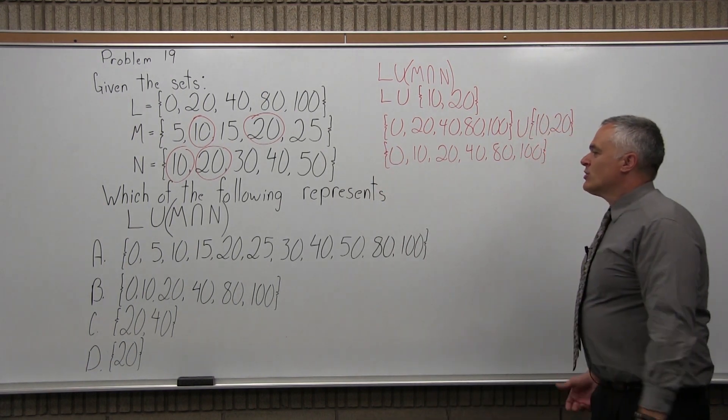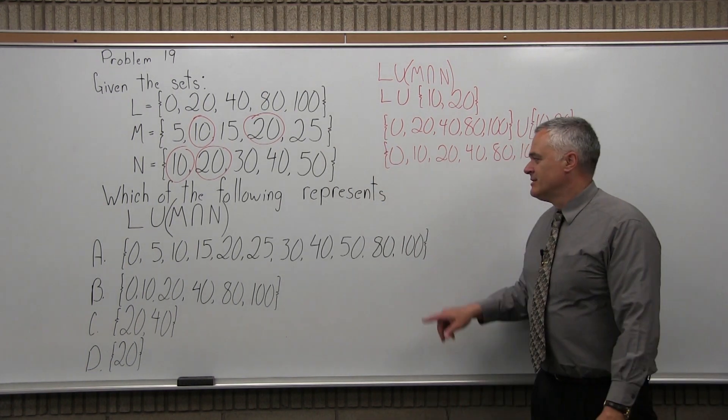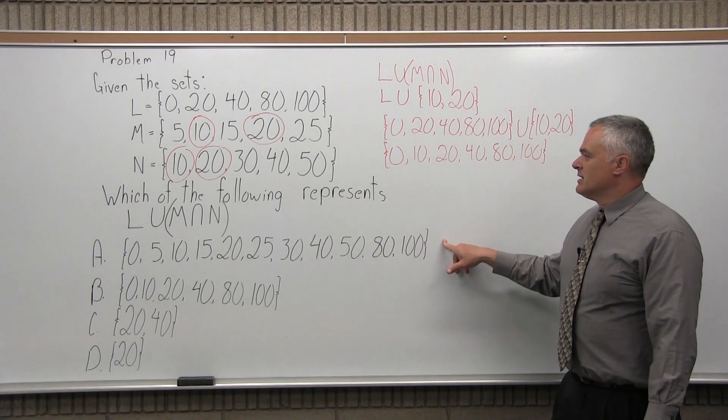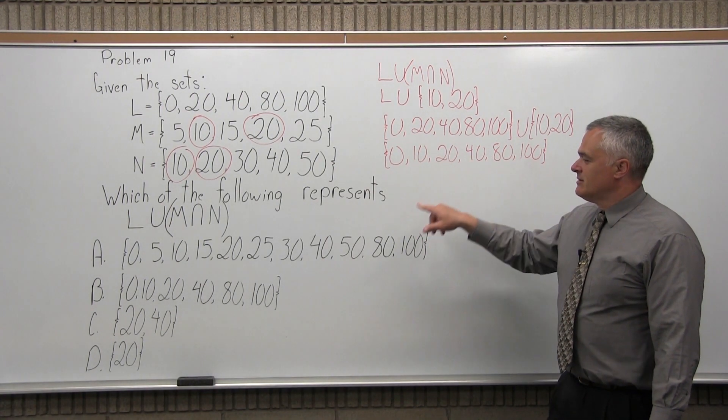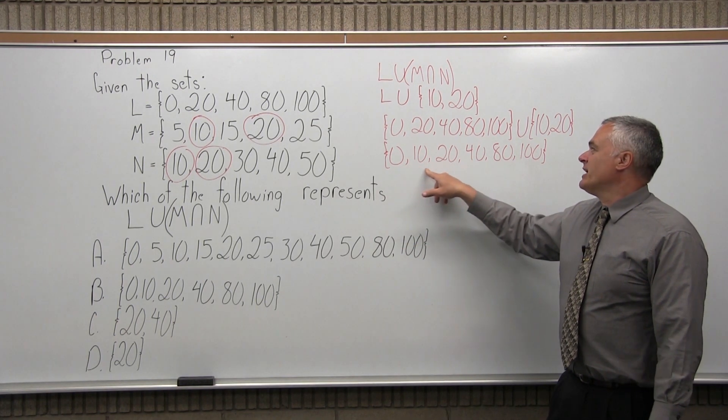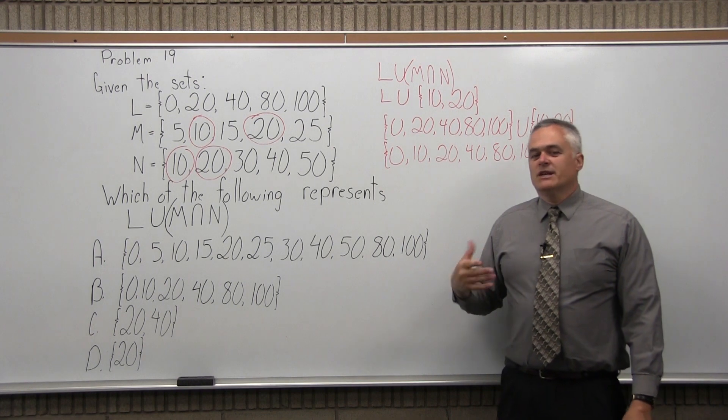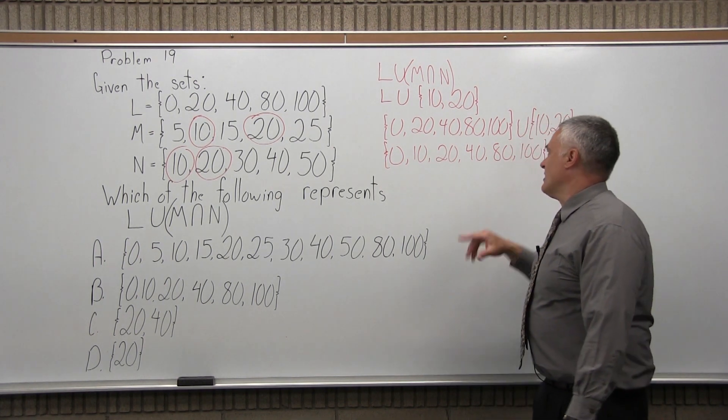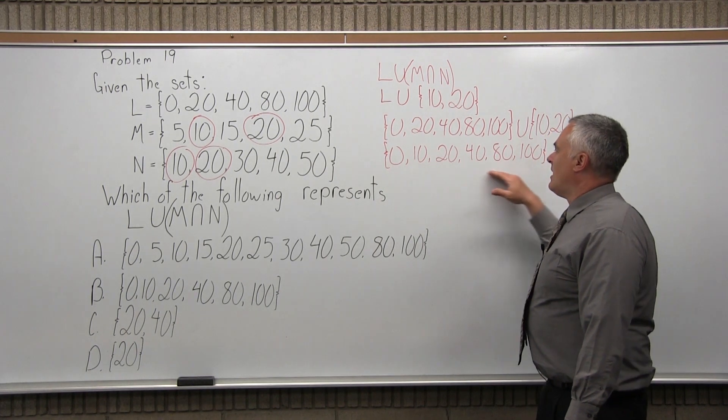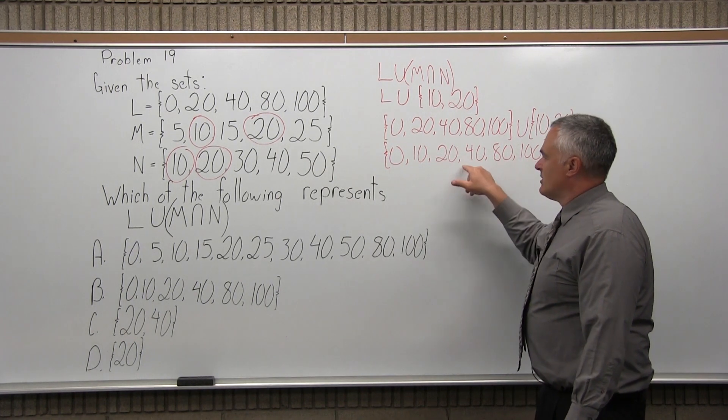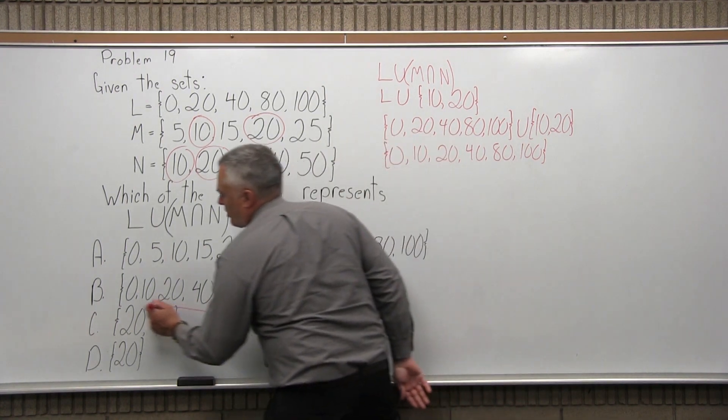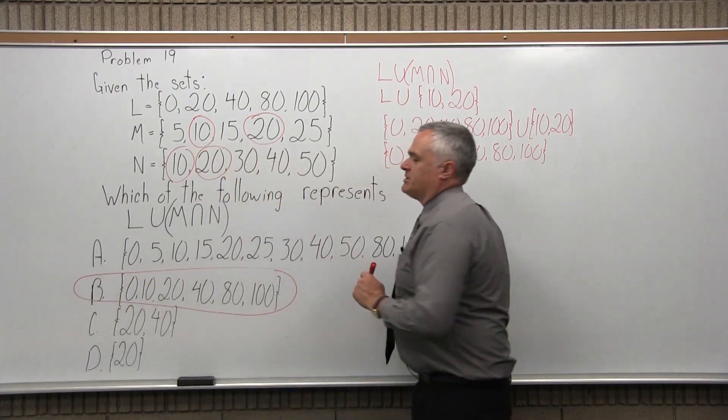Now, as I look through my options, option A does not fit. There's way too many items in it. Option B is actually a perfect match. Now, I put all the items in the set in increasing order. That's just traditional, but you don't have to do that. You can put the 80 first. The order doesn't matter. It's convention to put them in increasing order. But B is a perfect match. So the answer to problem 19 is option B.